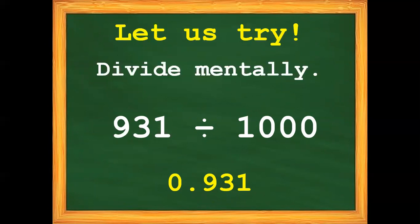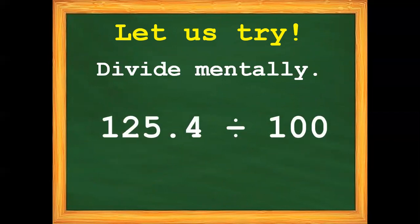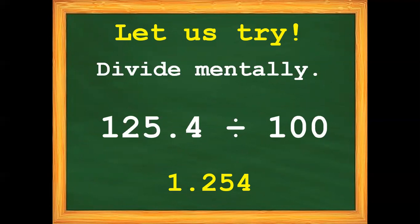Let us now proceed with number 3. Divide mentally — no pen and no paper, just use your mind. We have 125 and 4 tenths divided by 100. The correct answer is 1 and 254 thousandths. Did you get it? Very good!